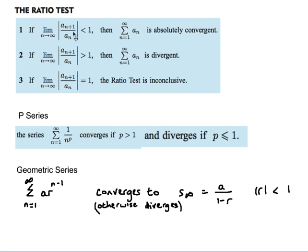For these sorts of questions, we need to basically use the ratio test. We use the idea that the limit as n approaches infinity of the absolute value of a_(n+1) over a_n — if that is less than 1, then the sum to infinity of that series is absolutely convergent. When the limit is equal to 1, we have an inconclusive result. We also need to use the ideas on the p-series: when p is greater than 1, the series converges, and diverges if p is less than or equal to 1. We could also use a geometric series, which converges if the absolute value of r is less than 1.